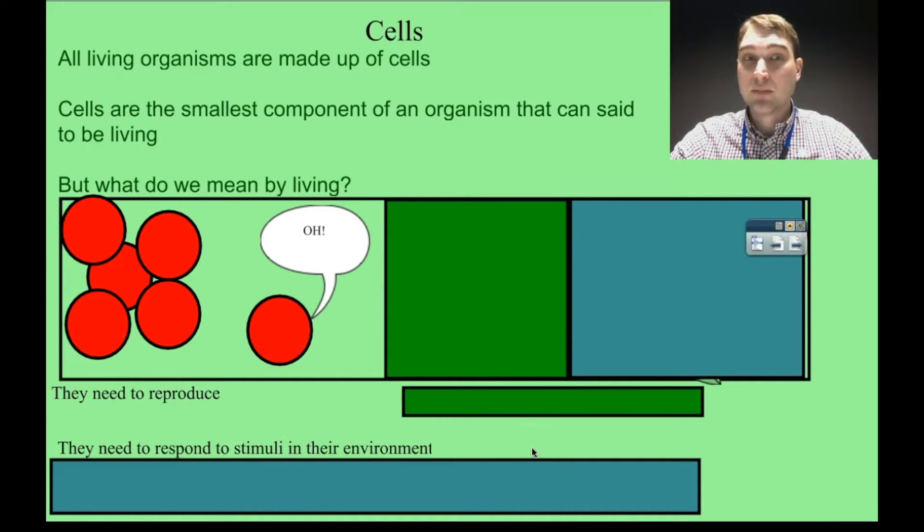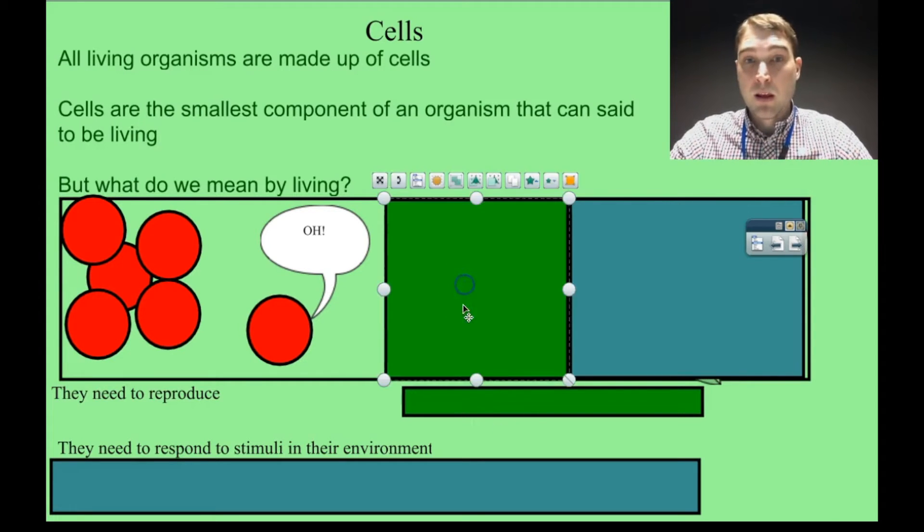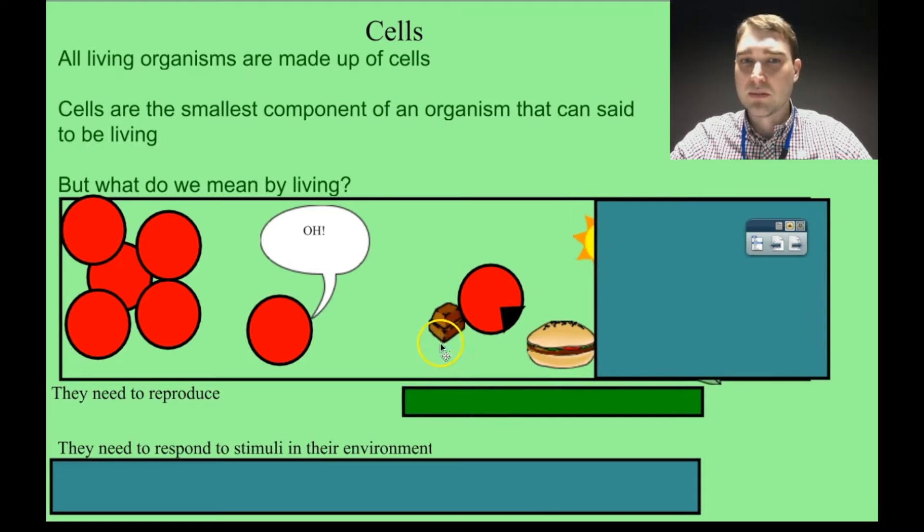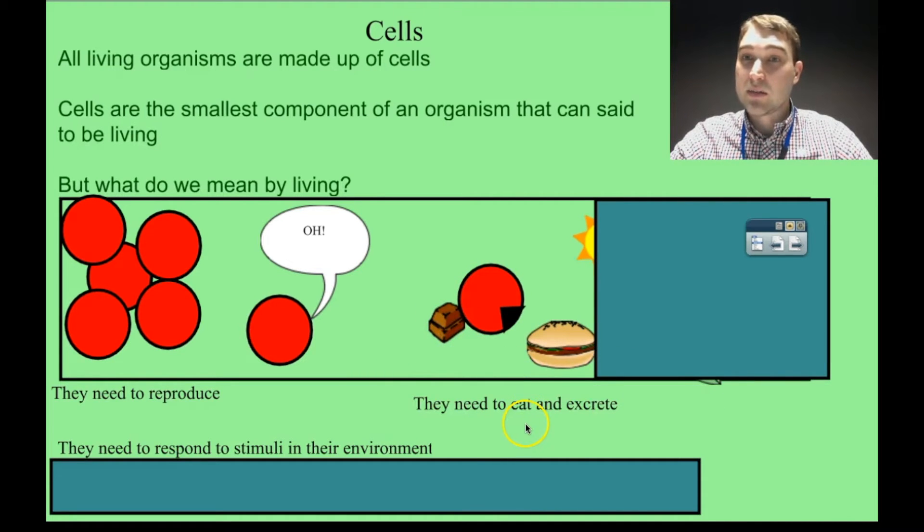Not all cells will scream 'Ow' when you poke them, but they might respond to chemicals in the environment. They might be able to follow other organisms to use them as food using chemicals in the environment. This one here, we've got a cell eating a hamburger and then giving out some chocolate, which I'm making look like waste. So they need to eat and excrete, take in energy and excrete waste products.